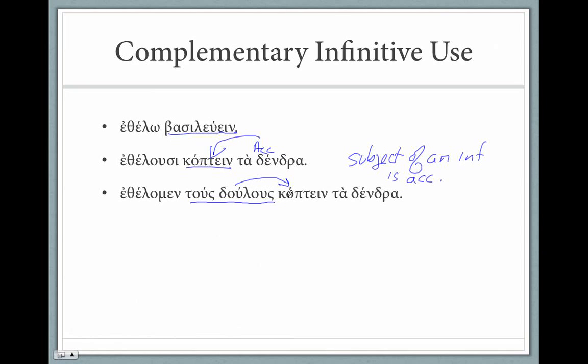How do we tell the difference between the two accusatives? Context. Obviously, we don't want the trees to chop down the slaves. We want the slaves to chop down the trees. So if it makes sense, you're probably at least able to argue your point.